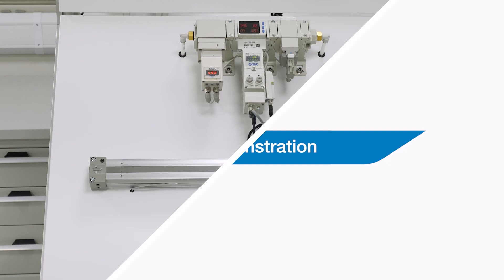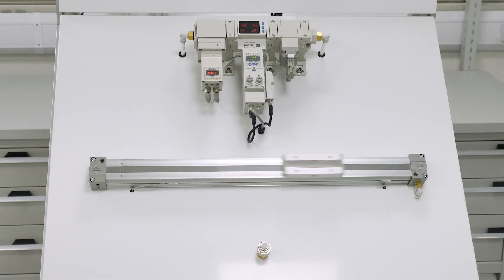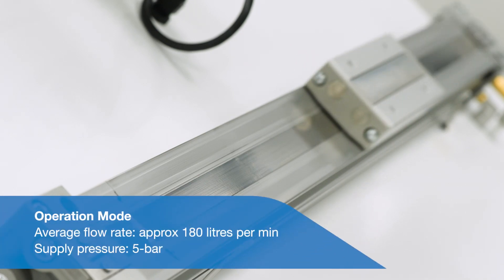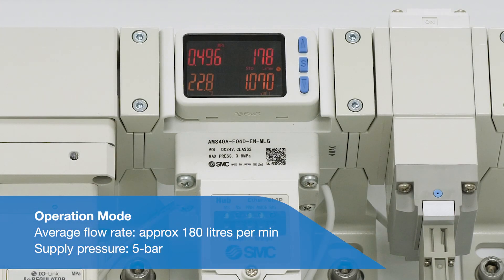We will now demonstrate the air management system functions with a practical example. Currently the machine simulated here by a cylinder in continued operation is in operation mode and the average flow rate is approximately 180 litres per minute and the supply pressure is 5 bar.